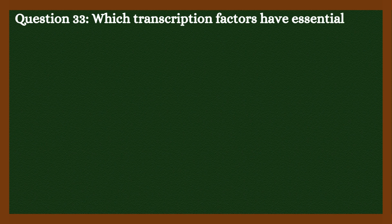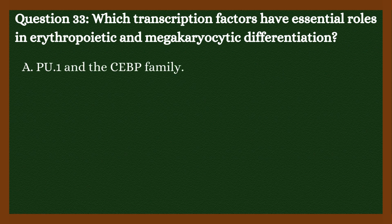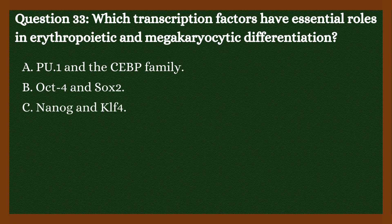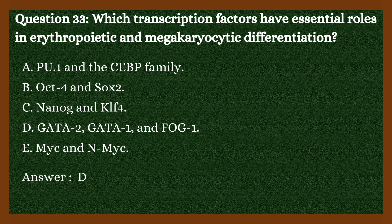Question 33: Which transcription factors have essential roles in erythropoietic and megakaryocytic differentiation? A. PU.1 and the CBP family. B. Oct-4 and SOX-2. C. Nanog and KLF-4. D. GATA-2, GATA-1 and FOG-1. E. MIC and NMIC. Answer is D. GATA-2, GATA-1 and FOG-1.